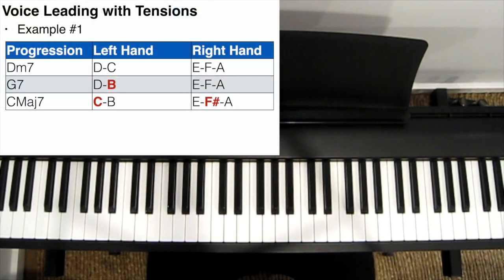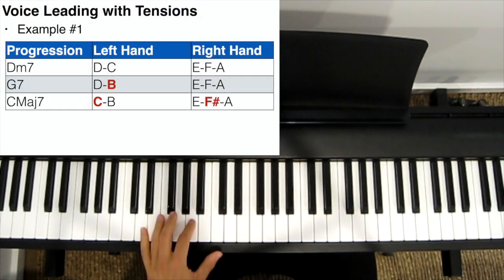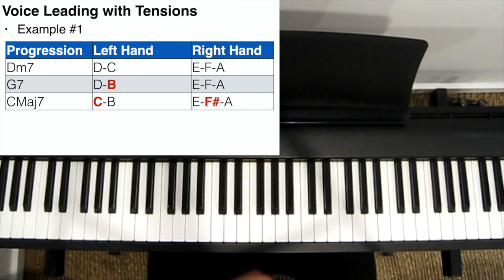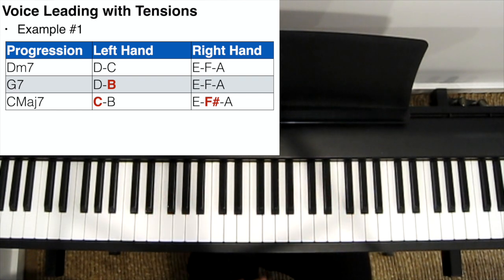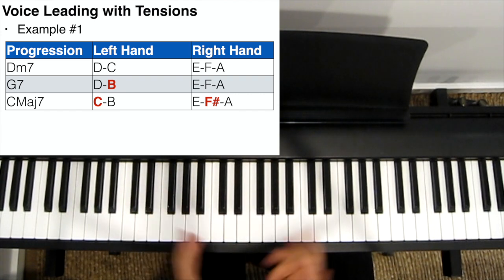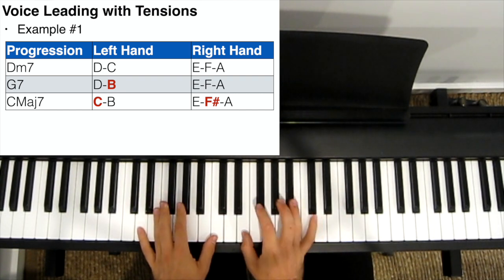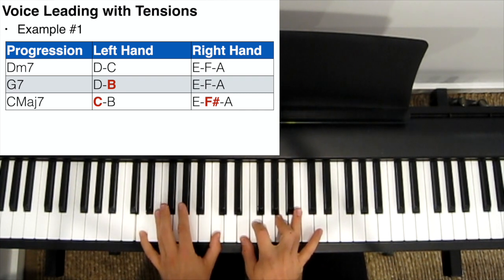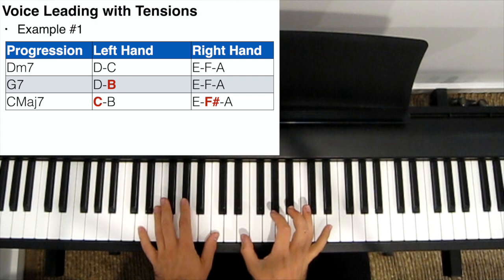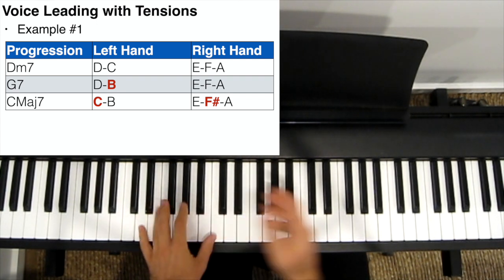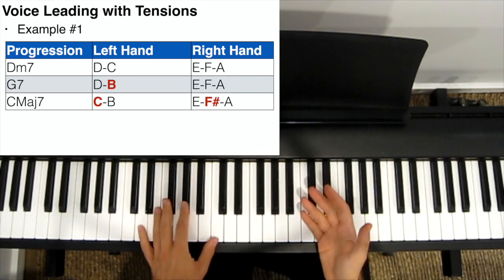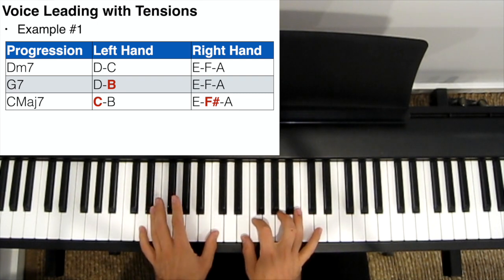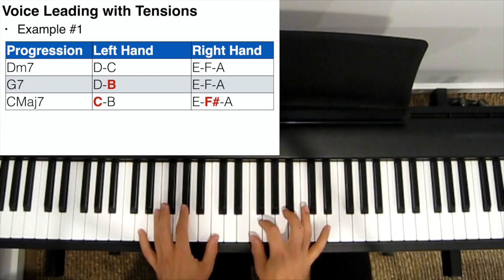Let's take a 2-5-1 in the key of C and play it using a five-note spread voicing, so all our chords have five notes spread over two hands. First chord is D minor 7. Let's play it using this voicing: left hand plays D and C, right hand plays E, F, and A. That's the root, seventh, ninth, third, and fifth — all notes allowed over a minor chord. We've got the third and seventh, we've got the root down the bottom, and we're not repeating any notes.